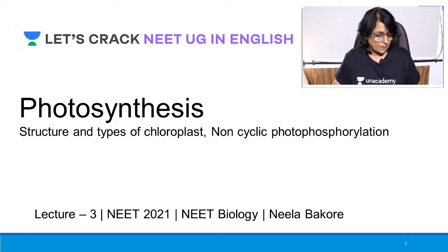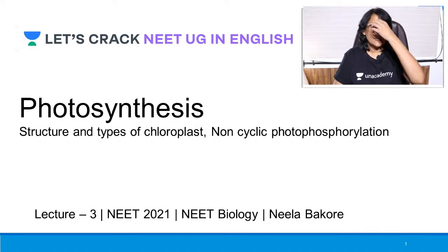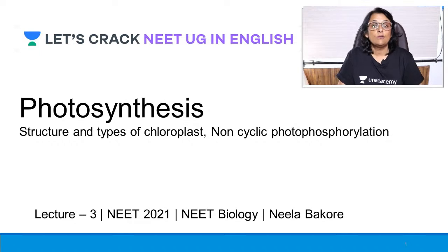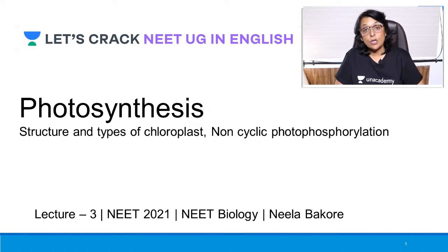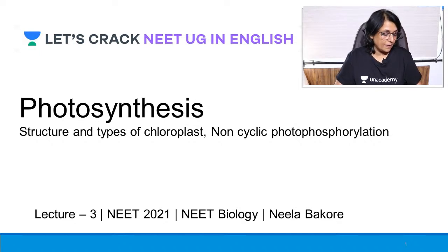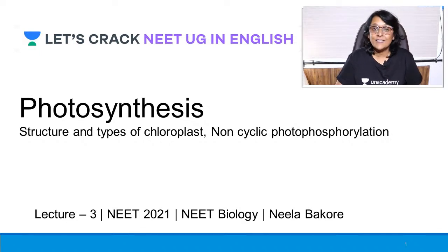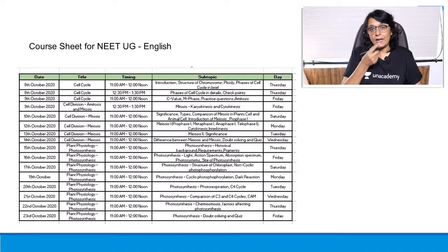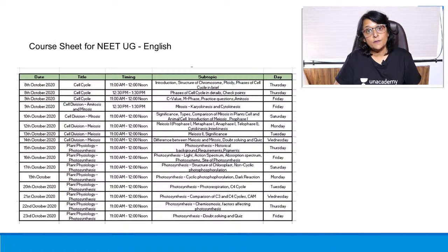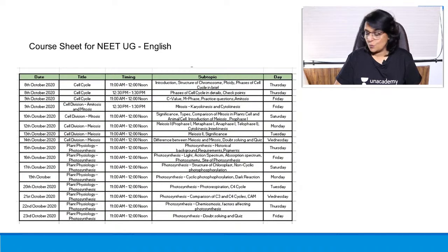Let us get started with the topic. We are on the photosynthesis chapter. The NEET result is out, so check with your friends and seniors who appeared for the exam, and also check the ranks they got. There are a couple of students who scored 100 percentile — that means full marks. This is our target, and to achieve it we need to finish the syllabus in time and have enough revision.